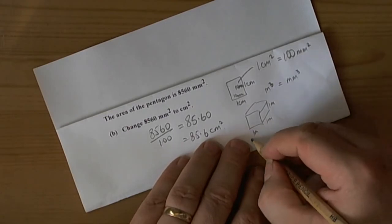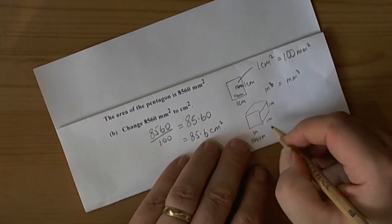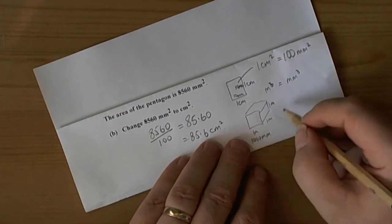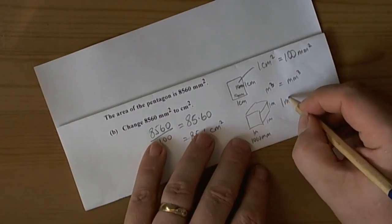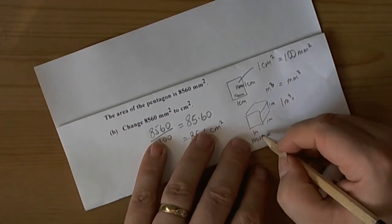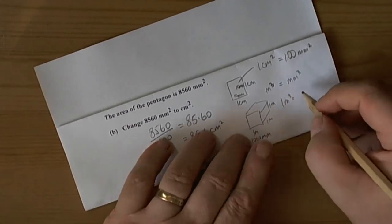And then we'd be doing the same in millimeters, and in one meter there's a thousand millimeters. So we'd end up doing that one cubic meter is equal to a thousand times a thousand times a thousand...